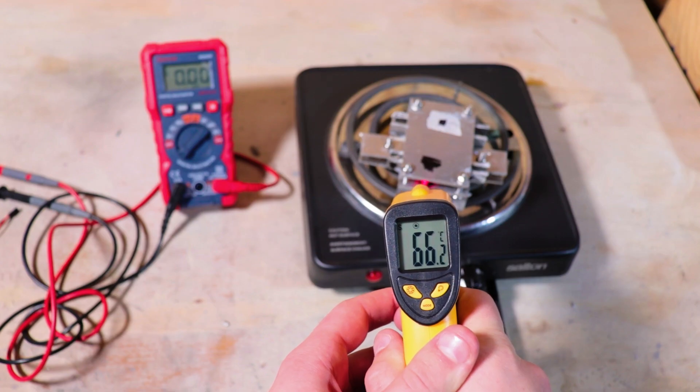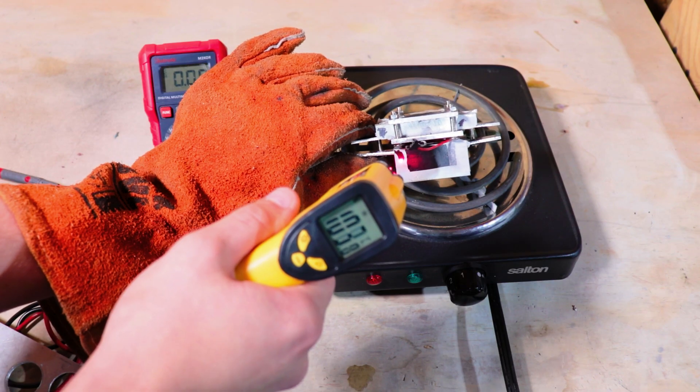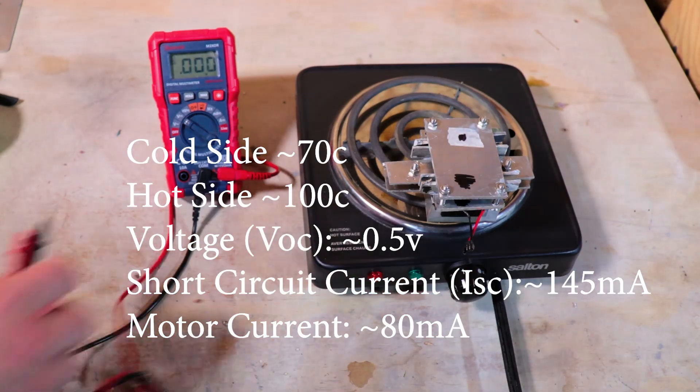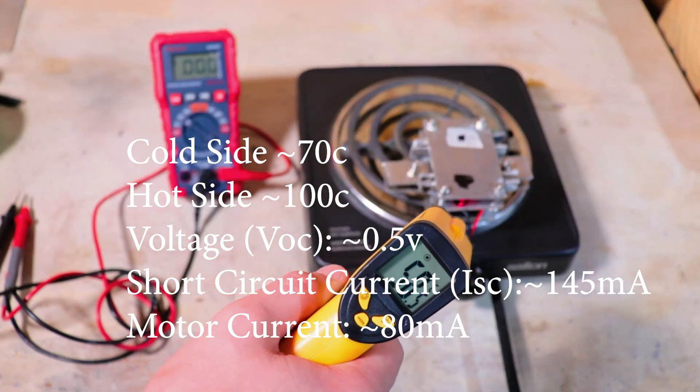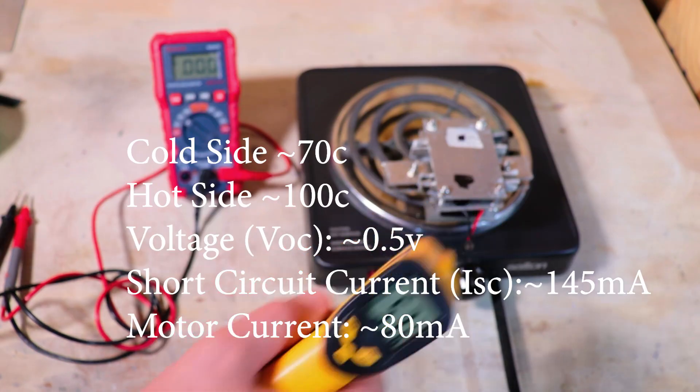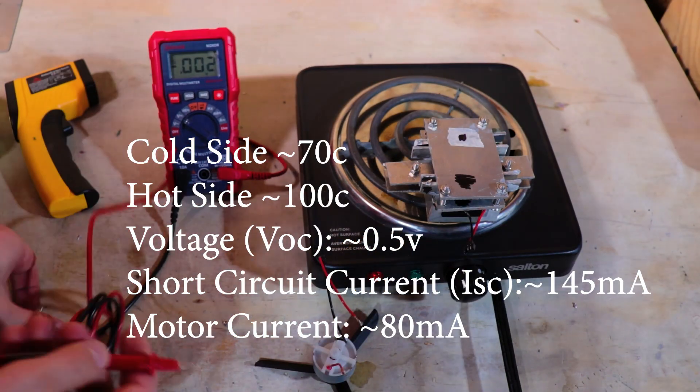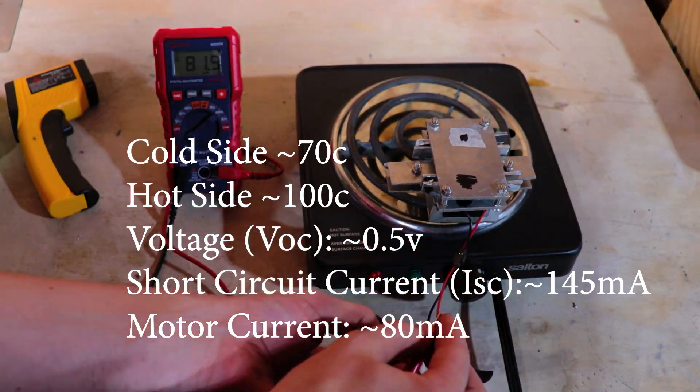Temperature wise, our cold side was 70 degrees, and our hot side was around 110 degrees. The cold side seemed to average around 70 degrees, 100 on the hot side, the voltage was around half a volt open circuit, and the short circuit current I should mention was around 145 milliamps, and the motor seemed to draw around 80 milliamps.